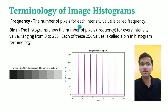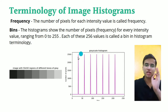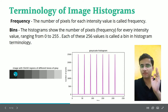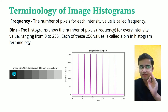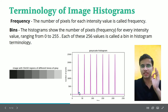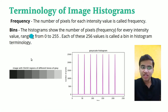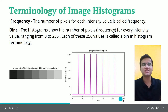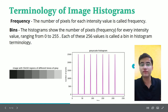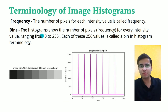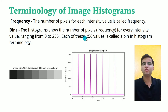Frequency: the number of pixels for each intensity value is called frequency. For example, intensity value 35 contains a certain number of pixels across the entire image — that count is the frequency. Bins: the number of values represented on the x-axis. For a 256-bin histogram, it shows the number of pixels for every intensity value ranging from 0 to 255, so each of these 256 values is a bin.